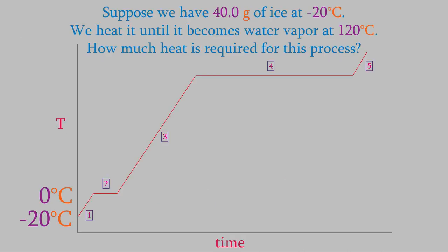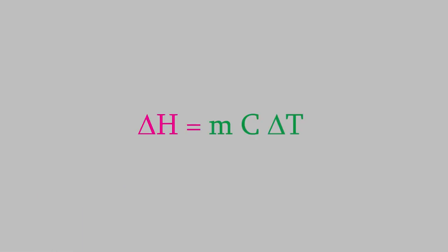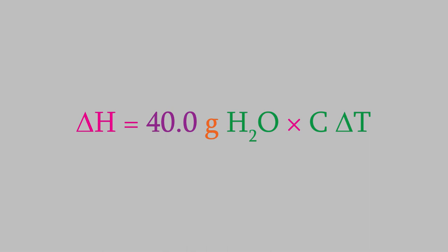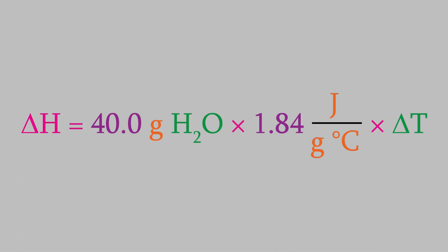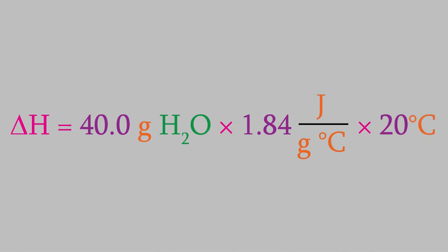Finally, in our last step, we're heating the water vapor from 100 Celsius to 120 Celsius. This is another step where we can use the calorimetry formula. We have 40.0 grams of water vapor, and if we look up the specific heat capacity, we find out that it's 1.84 joules per gram degrees Celsius. The change in temperature is 20.0 degrees. That gives us 1,472 joules for the enthalpy of the final step.